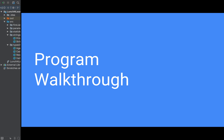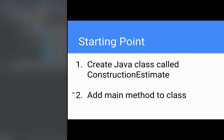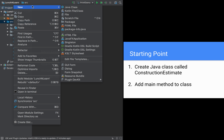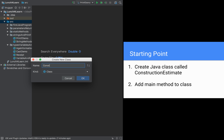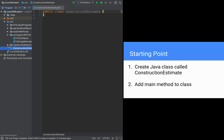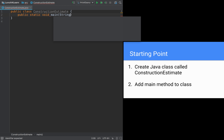For the starting point, you should create a Java class called ConstructionEstimate and add the main method to the class. I'm going to go ahead and do that in IntelliJ — new Java class, call it ConstructionEstimate, putting it straight into the source. I'll double-click to make the panel on the left go away, and add the main method: public static void main String args.